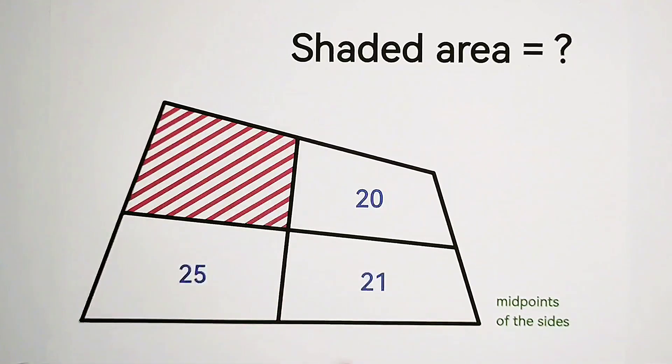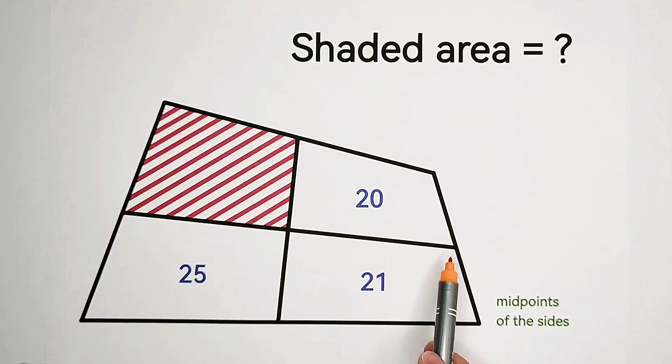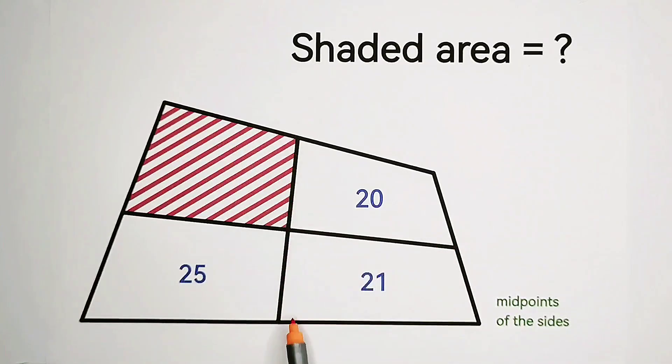Here, we have a quadrilateral with four sides. Now, we choose their midpoints. And these two midpoints, these two opposite midpoints, are connected, these two as well.